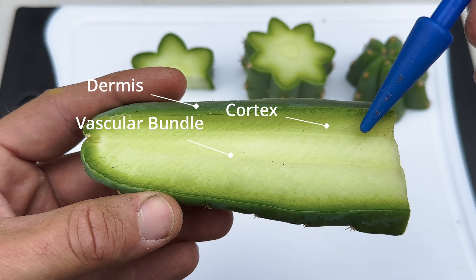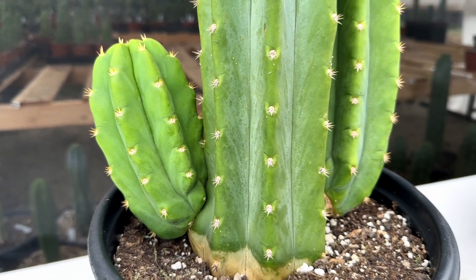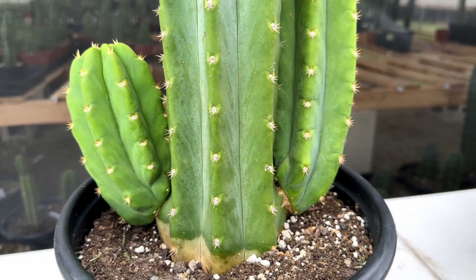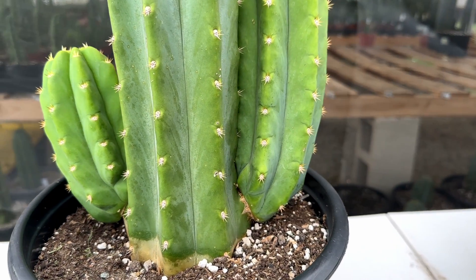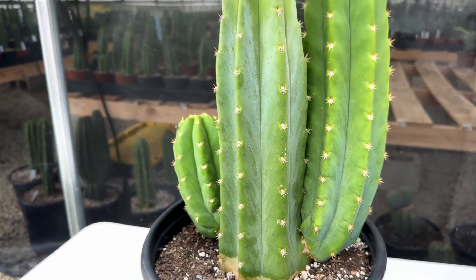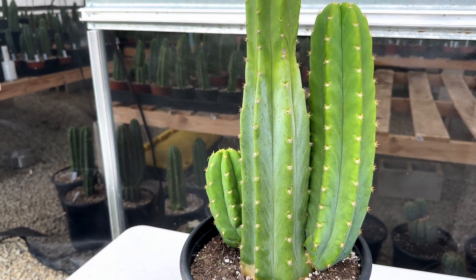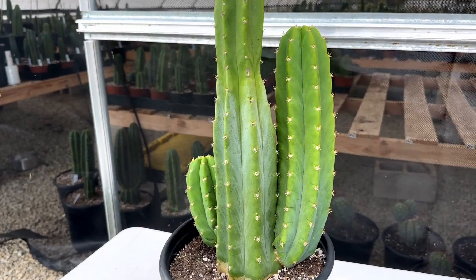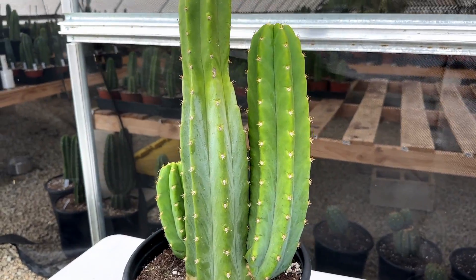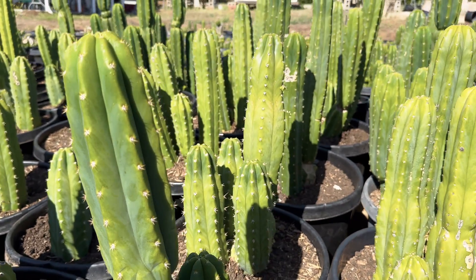The cortex lies in the heart of the stem, between the vascular bundle and the dermis. It is a storage hub for water and nutrients that sustains the cactus. Offsets, also known as pups, emerge at the base of mature cacti and can be separated, propagated, and nurtured into their own independent plants.